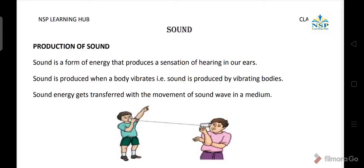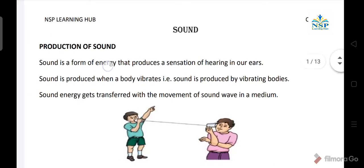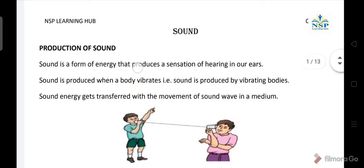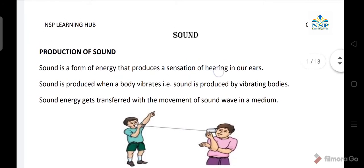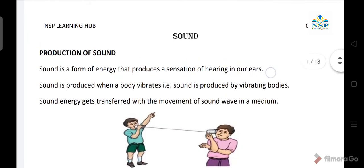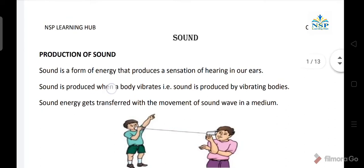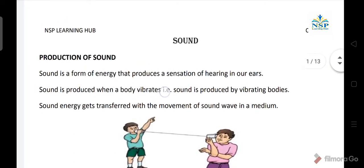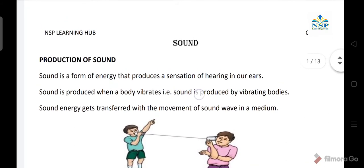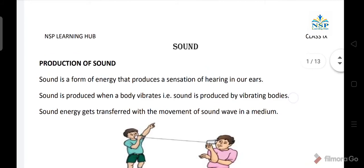Hello friends, today we study the chapter Sound of class 9th. Production of sound: Sound is the form of energy that produces a sensation of hearing in our ears. Sound is produced when a body vibrates — that means sound is produced by vibrating bodies.